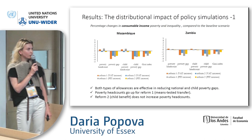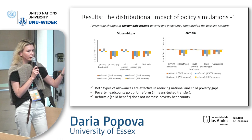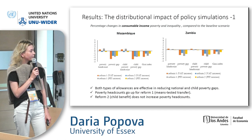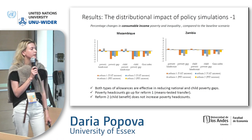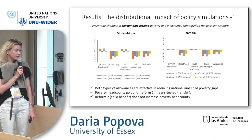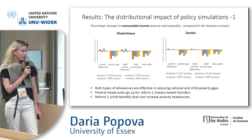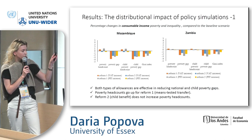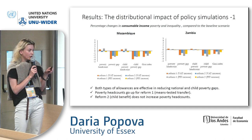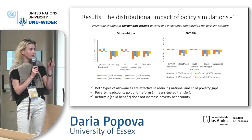Moving on to the results: this shows the impact of the two allowances on poverty headcount, poverty gap, child poverty headcount, child poverty gap, and the Gini index. Both types of allowances are effective in reducing national and child poverty gaps. However, in the case of Reform one — the means-tested transfer — poverty headcounts go up. In the case of Reform two — the universal child benefit — there is no such problem, so poverty headcounts do not increase.